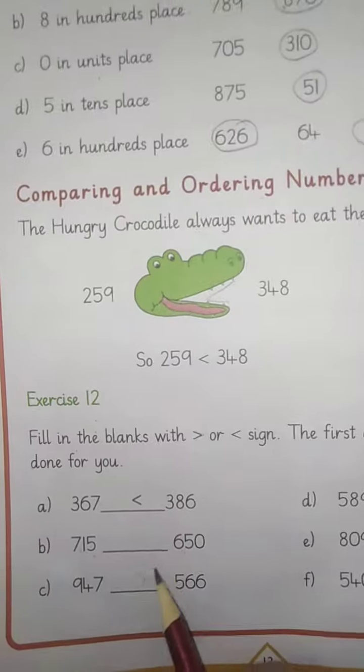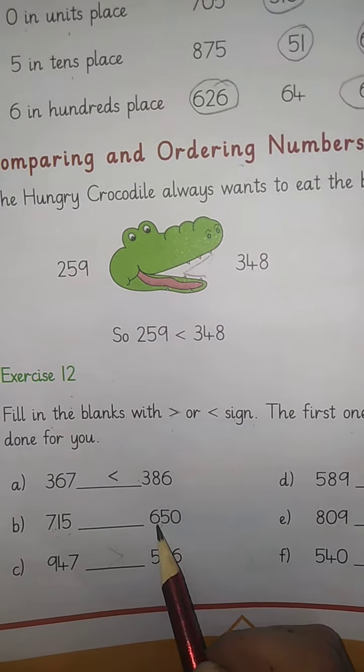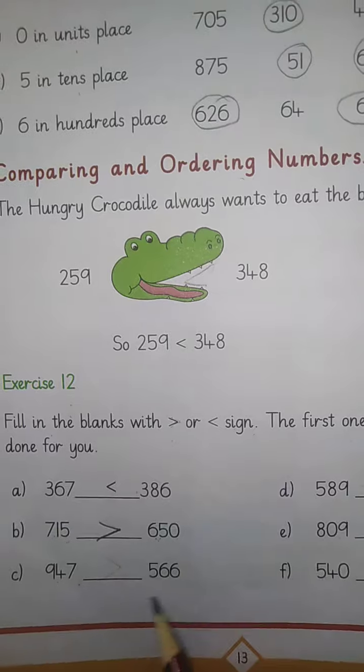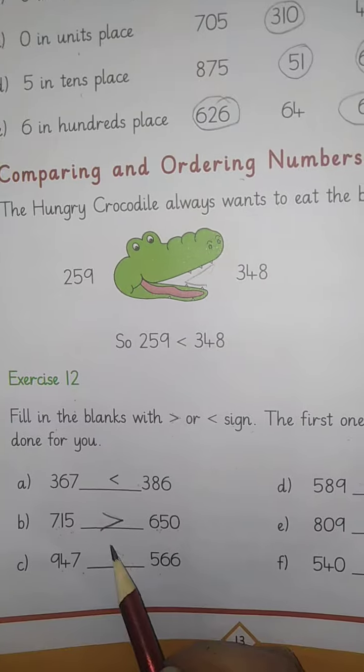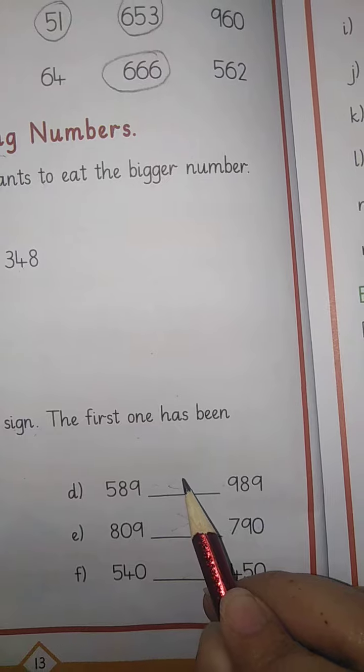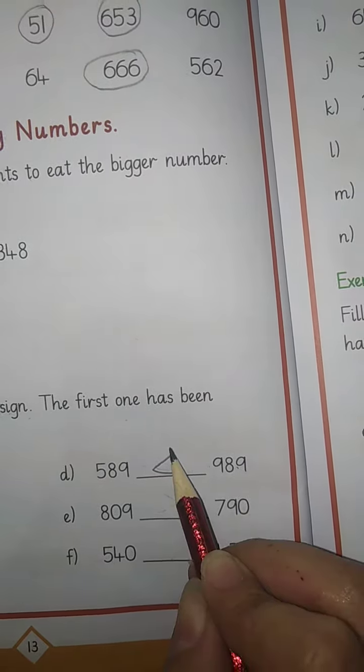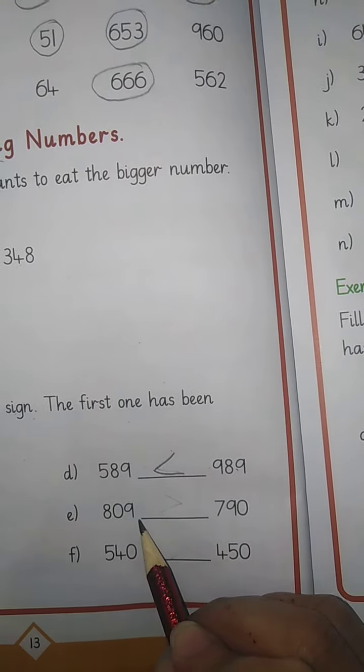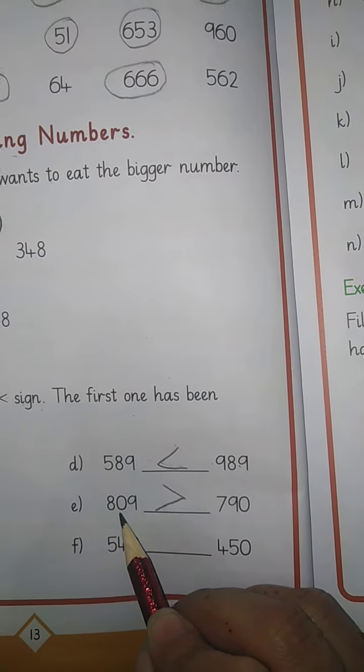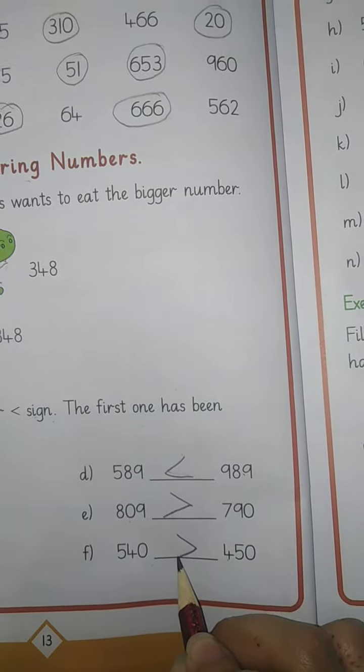Fill in the blanks. Exercise number 12: fill in the blanks with bigger and smaller signs. The first one has been done for you. Second, we will do 715 and 650. Which number is bigger? Yes, 715. From 947 and 566? 947 is bigger. From 809 and 790, which is bigger? Yes, 809 is bigger. 540 and 450? 540.